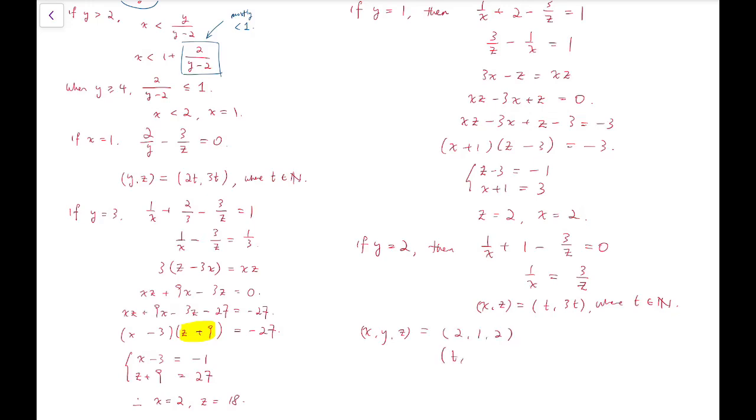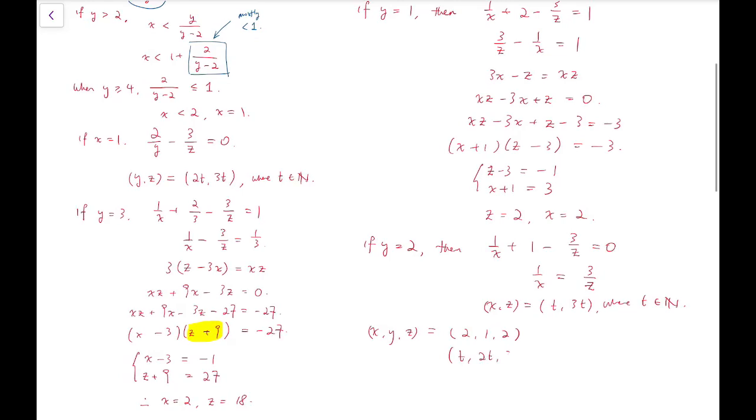x, y, z equals 2, 1, 2 when y is 1. And then that's t, 2t—typo, should be t, 2, and 3t, and that's when y is equal to 2.